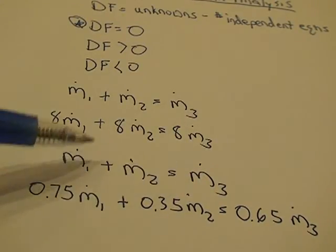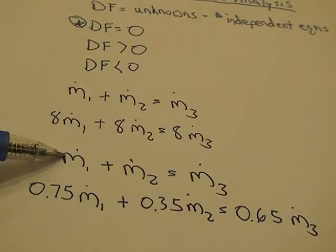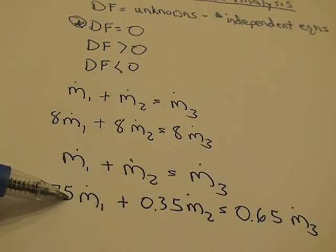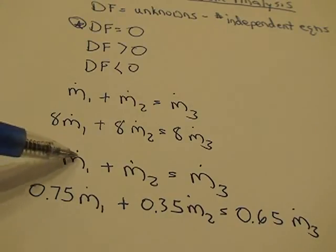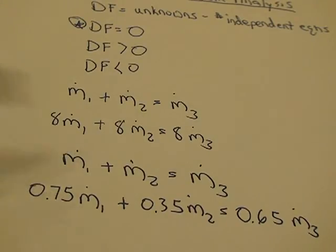These two would be independent equations. There's not really a number that you're going to be able to multiply this first equation by or divide it by to get this second equation. And you can't really add this first equation to anything to really get this equation that you have right now. So, they're both independent.